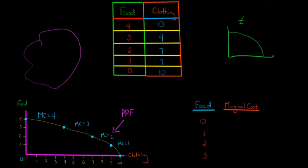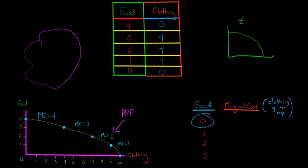So when we have no food at all and give up some clothing to get one piece of food, it doesn't cost us much. We can put together a little table: when we have zero units of food, the marginal cost of producing one unit of food — the clothing given up — is one. When we have one food and go to two, the marginal cost was two. And then three and four. So we can fill that out: three and four.